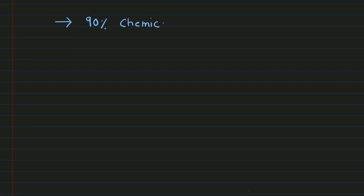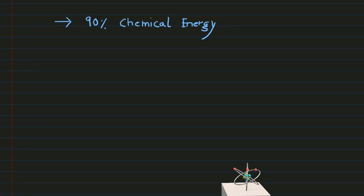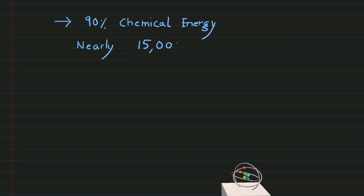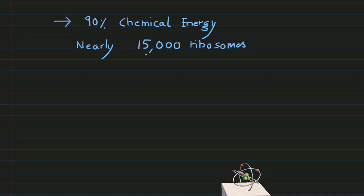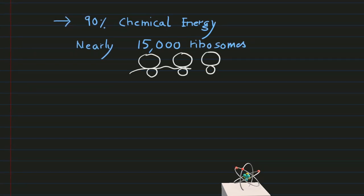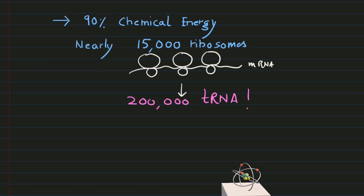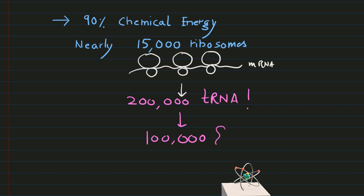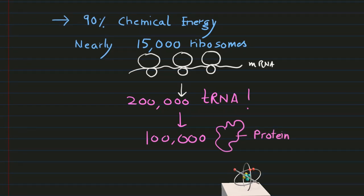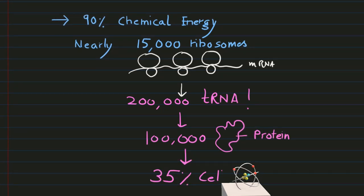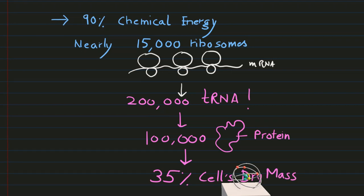Nearly 90% of cells' chemical energy is required for protein synthesis. 1500 ribosome molecules and 200,000 tRNA molecules in addition to 100,000 proteins work together to form 35% of cells' dry mass in a typical E. coli cell.